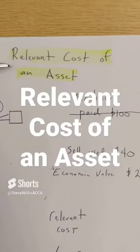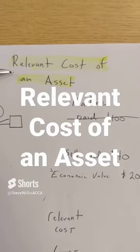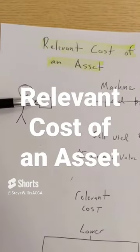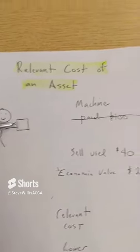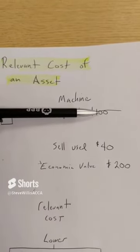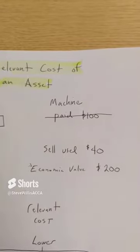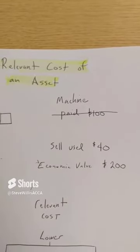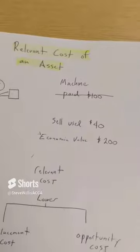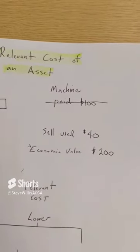Let's look at the relevant cost of an asset when we're making a short-term one-time decision. I own a soft serve ice cream machine. I paid $100 for it. I sell ice cream in front of my house in the summertime. I have an opportunity to go to a new location for the rest of the summer. What's the value of this machine to me in my costing?